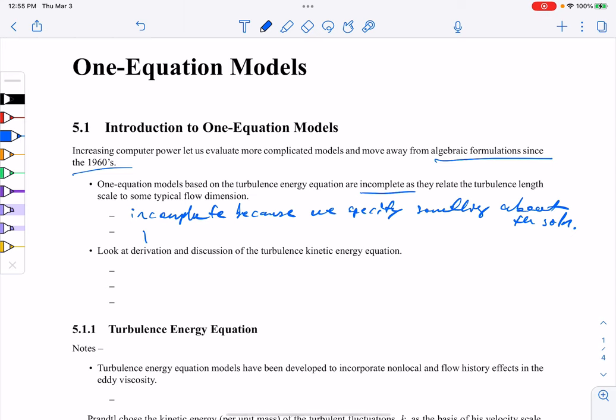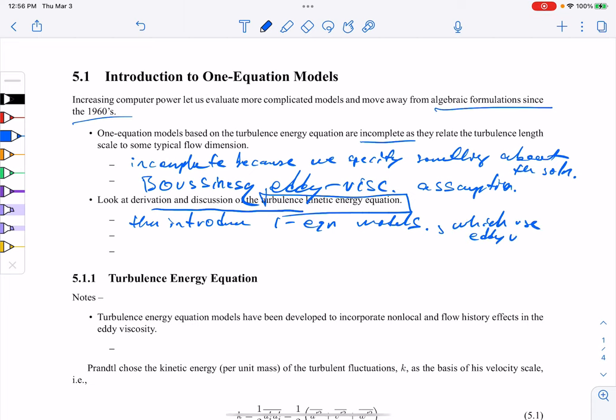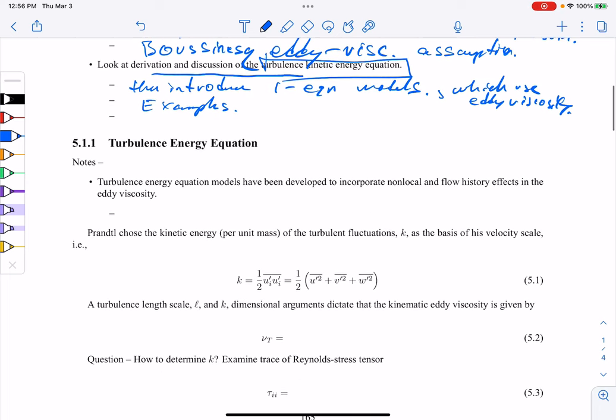These models in general use the Boussinesq eddy viscosity assumption. We're going to try and look and derive this turbulent kinetic energy equation in a little bit simplified form today. Then we're going to introduce the one equation models which use the eddy viscosity. We'll try and look at some examples like in Mentor's paper today.